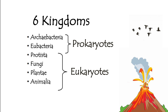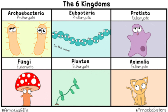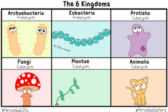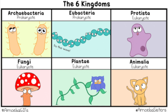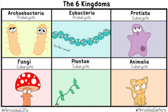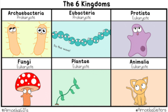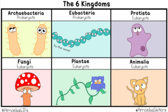To keep things short today, there are six kingdoms we can classify living organisms into. We have Archaeabacteria, Eubacteria, Protista, Fungi, Plantae, and Animalia.